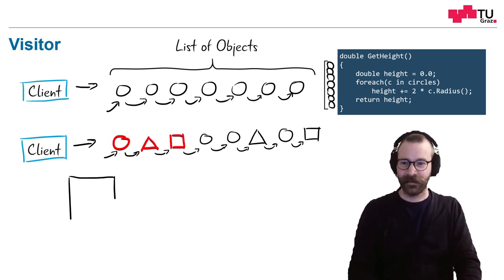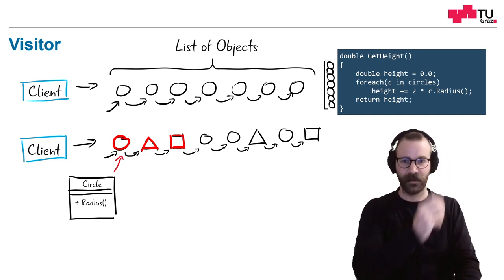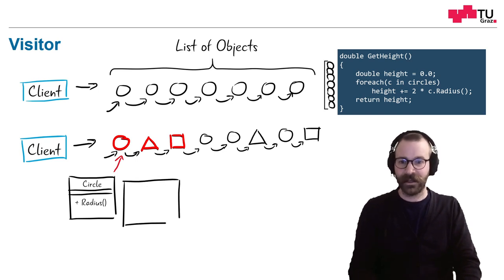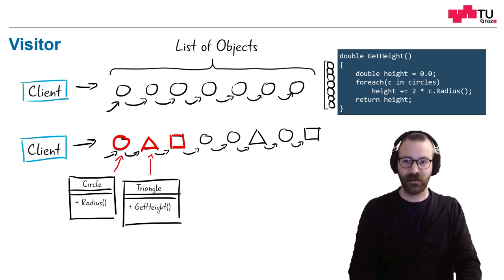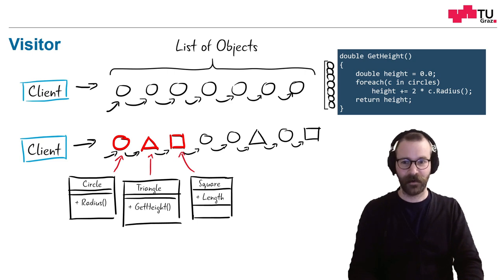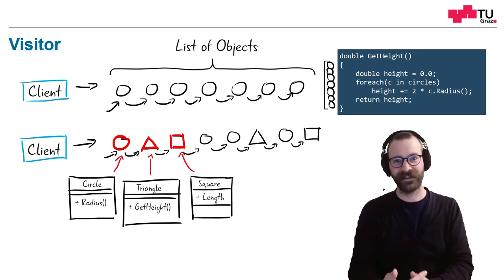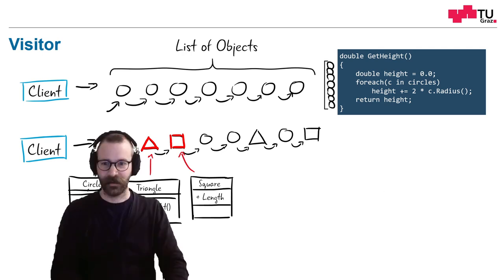For example, a circle could look like this. We have our circle and we have the radius method, which returns the radius, just like we have used it before. In a triangle, this could look like this. A triangle has this get height method, which returns the height of the triangle perfectly. This is just what we need, but it's different to the circle. And furthermore, the square does not have a height, it just has a length. And we have to use this length property in this case. It's not even a method.